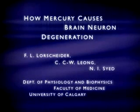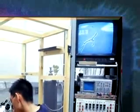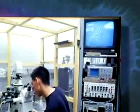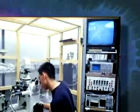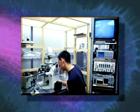Mercury has long been known to be a potent neurotoxic substance, whether it is inhaled or consumed in the diet as a food contaminant. Over the past 15 years, medical research laboratories have established that dental amalgam tooth fillings are a major contributor to mercury body burden.